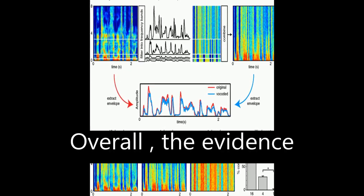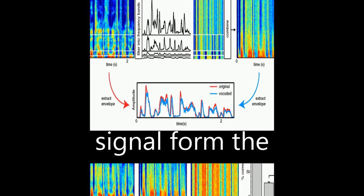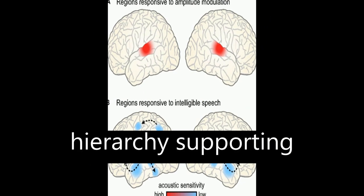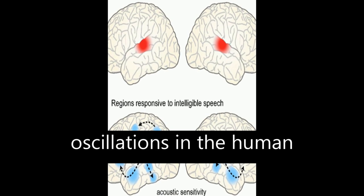Overall, the evidence suggests that low-frequency oscillations in the acoustic speech signal form the foundation of a rhythmic hierarchy supporting spoken language, mirrored by phase-locked oscillations in the human brain.